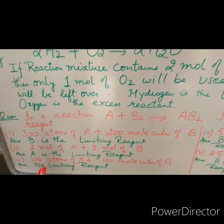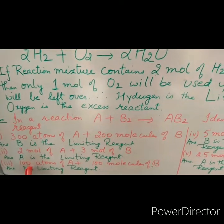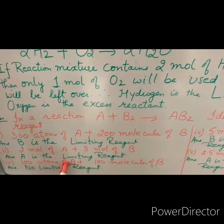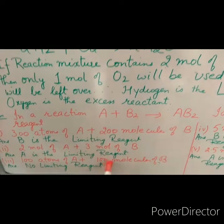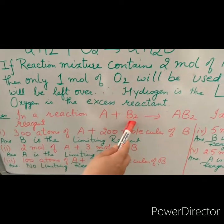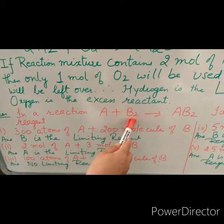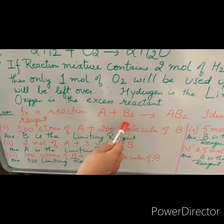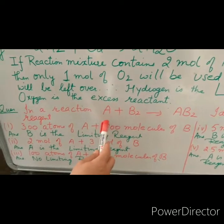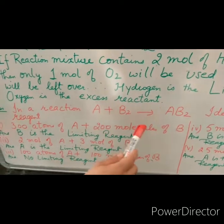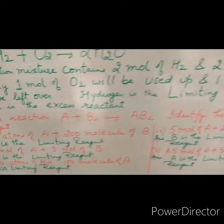Now let us see the third condition where we have 100 atoms of A and 100 molecules of B₂. If we have 100 atoms of A and 100 molecules of B₂, then this is a stoichiometric mixture. There is no limiting reagent in this reaction.